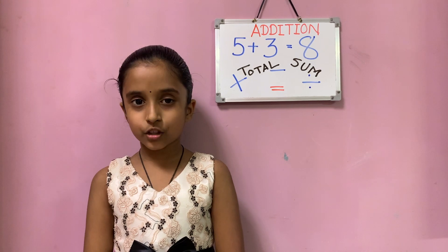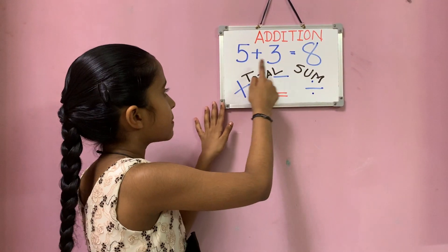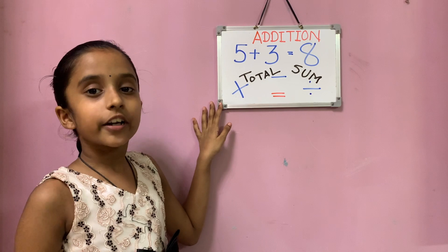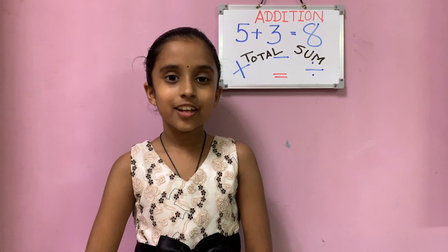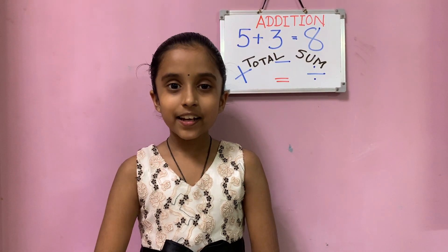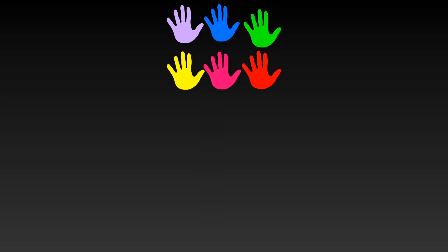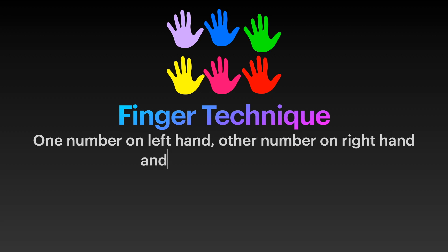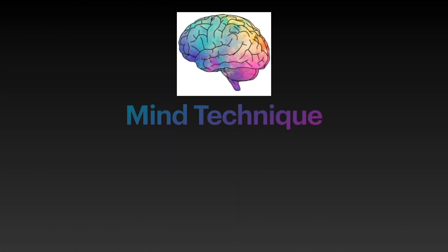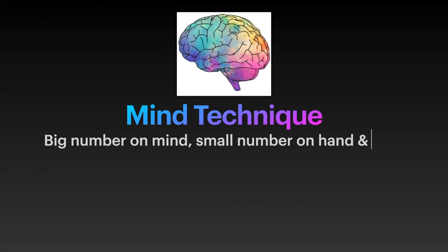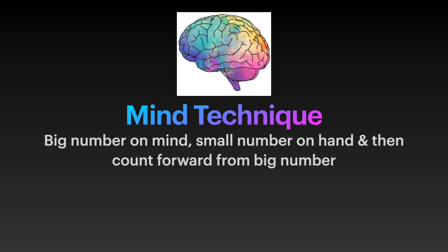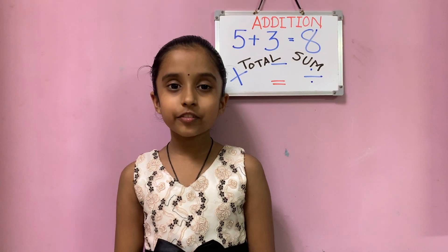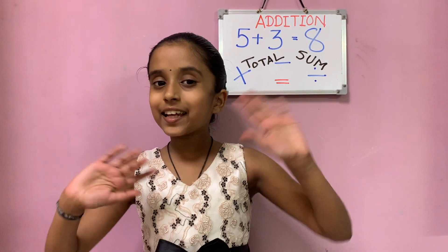If someone asks you, what is the total of five plus three, or what is the sum of five plus three — all that means addition. Remember the finger technique: one number on the left hand, the other on the right hand, then forward count. For the mind technique: big number in mind, smaller number on hand, then forward count from the big number. Here we come to the end of the video. Bye! Take care!